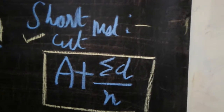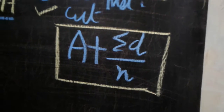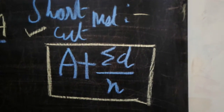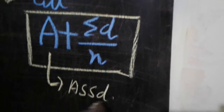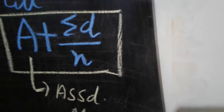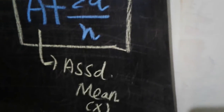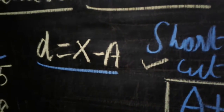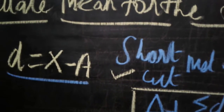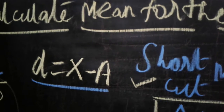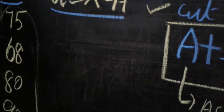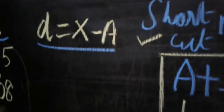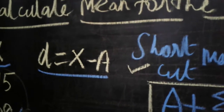The shortcut method formula is: x̄ = a + Σd / n. Here, 'a' means the assumed mean. We are given several x values — for example: 75, 68, 80, 92, 56 — and we just take any one value as the assumed mean. Here, I have taken 68 as the assumed mean.